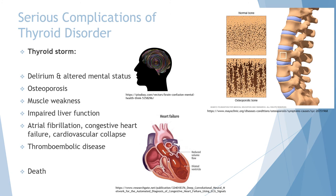One serious complication of thyroid disorder is known as thyroid storm. The sudden increase in metabolic rate due to high thyroid hormone levels can lead to delirium, altered mental status, decreased bone density causing osteoporotic comorbidity, muscle weakness, and impaired liver function. Because of cardiac overload, there is atrial fibrillation, CHF, and cardiovascular collapse. The hyperdynamic circulation and turbulence in the blood can cause thromboembolic disease. This complication is very urgent and can lead to death if not managed appropriately.